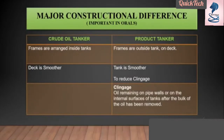The crude oil tanker has frames arranged inside the tanks, whereas in the product tanker the frames are outside the tank. This means the crude oil tanker tank is smoother inside, whereas in the product tanker the tank is smoother on the outside — and this is basically done to reduce the clingage.